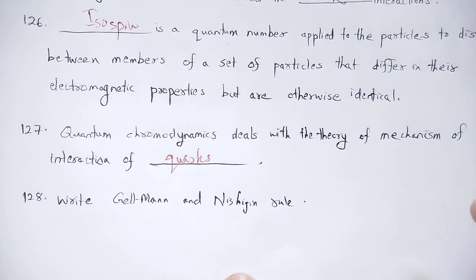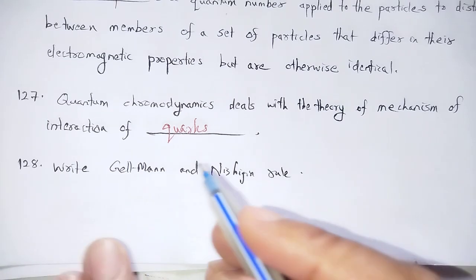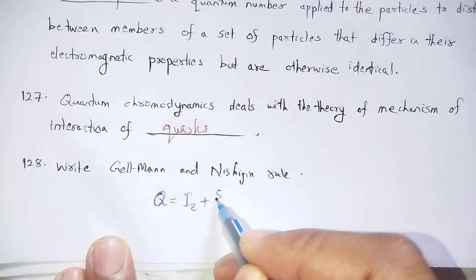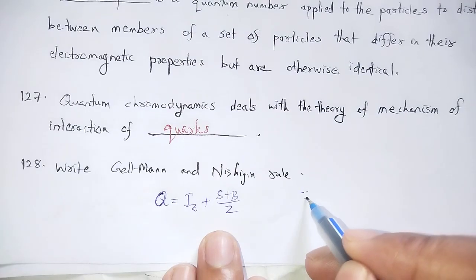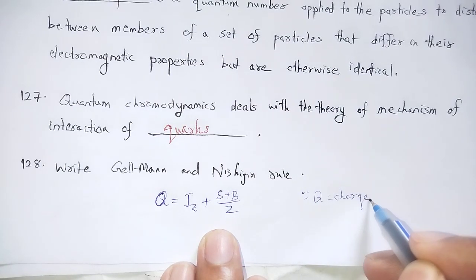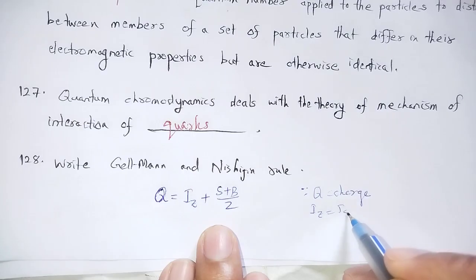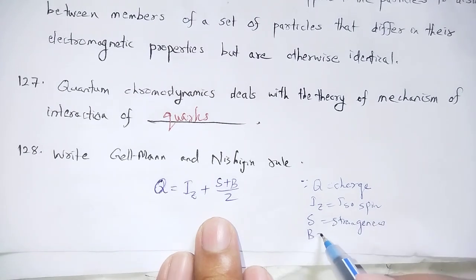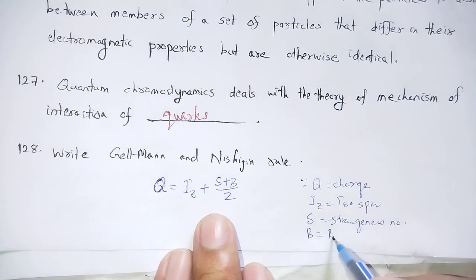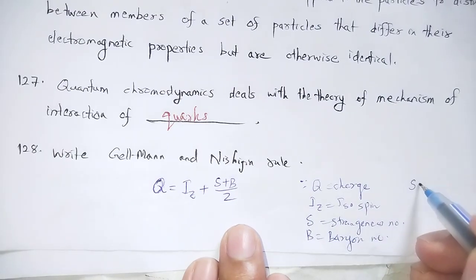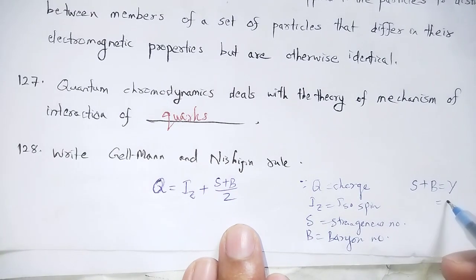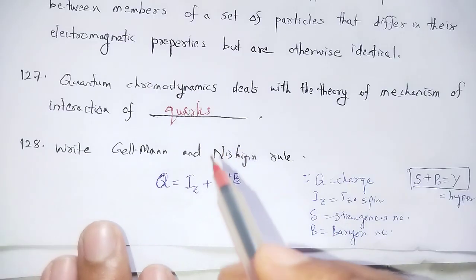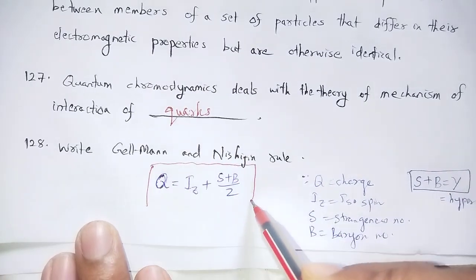The Gell-Mann–Nishijima rule states: Q = Iz + (S + B) / 2, where Q is the charge, Iz is the isospin, S is the strangeness, and B is the baryon number. The combination of strangeness number and baryon number is collectively called hypercharge.